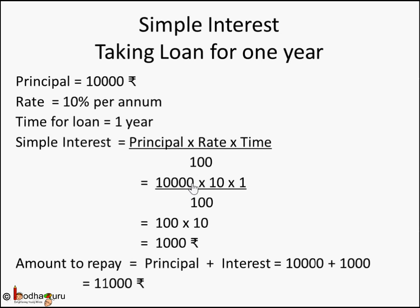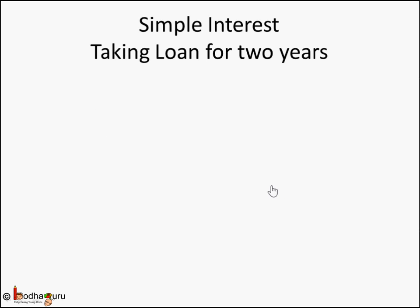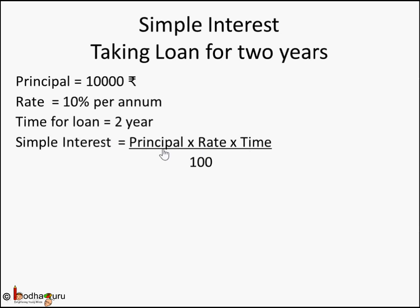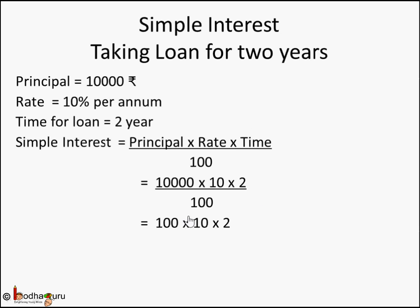Simple interest is P × R × T / 100. Now suppose Sukram took the loan for two years — how does this change? Principal remains 10,000 rupees, rate remains 10% per annum, but time increases from one year to two years. Using the same formula: 10,000 × 10 × 2 / 100, the value comes out to be 2,000 rupees as the simple interest for the two-year period.